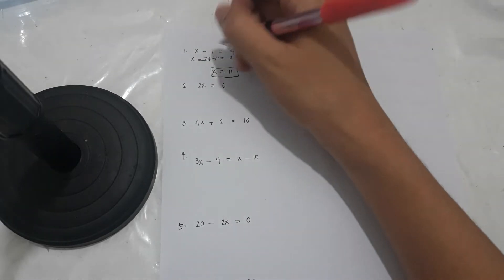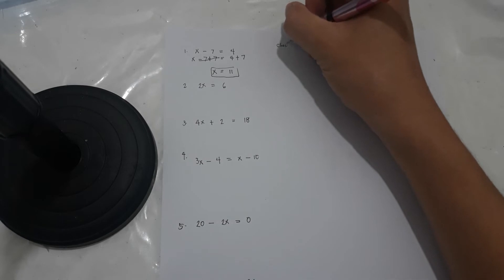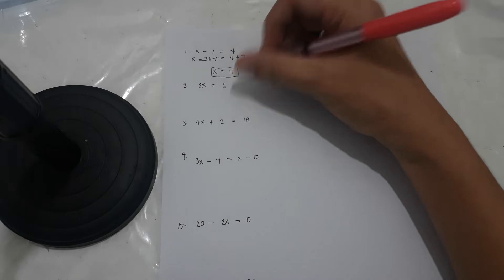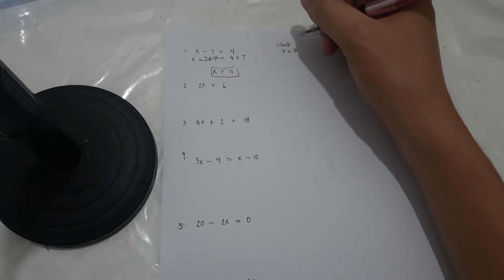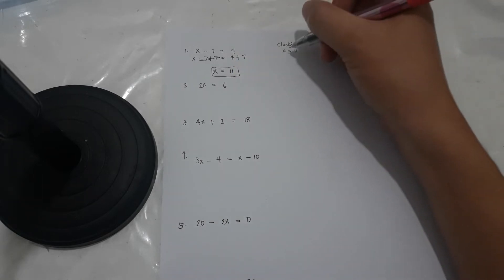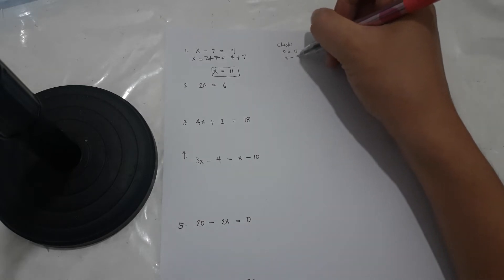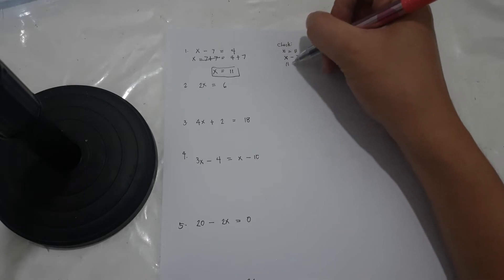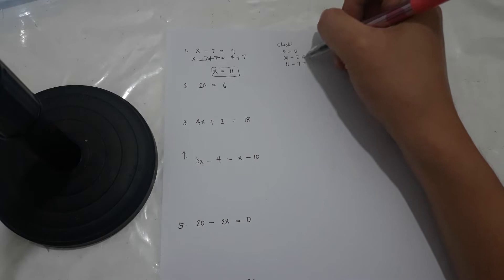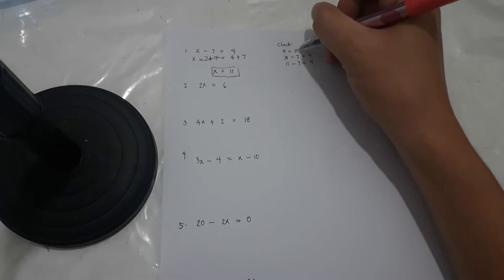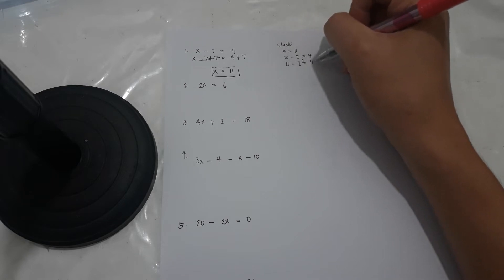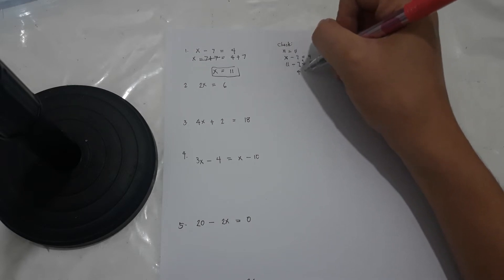To check: x equals 11. This is the substitution property of equality — when x equals 11, replace x with 11 in the original equation. So 11 minus 7: is 11 minus 7 equal to 4? Yes, 4 is equal to 4. This is correct.